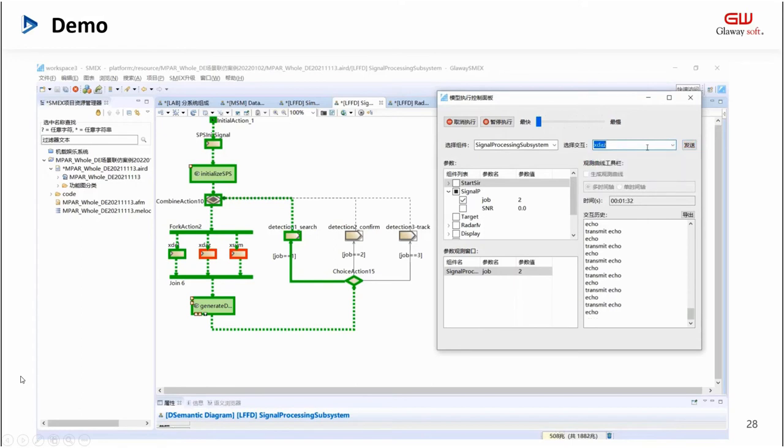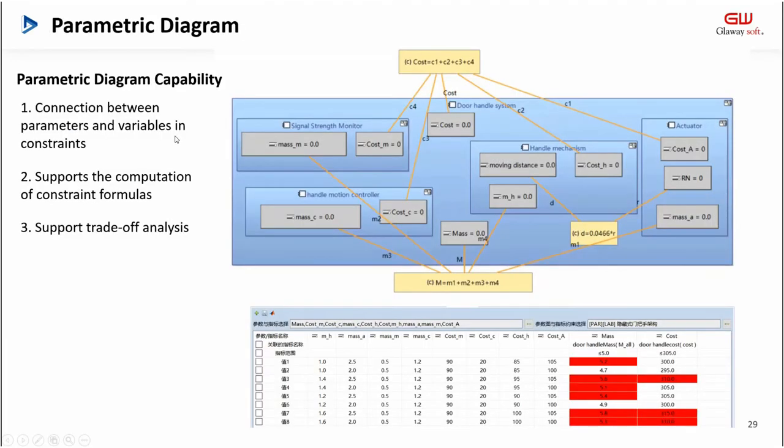The last part is the parametric diagram. In the parametric diagram, we have three basic types of elements: parameter values, binding connectors, and constraints. We can connect parameters and variables in constraints through binding connectors. When executed, Capella evaluates the formulas in the constraints and assigns output values to the corresponding parameters. The parametric diagram can participate in dynamic simulation. When performing a dynamic simulation, the parameter value changes synchronously according to the calculation results of the relevant constraint formulas.